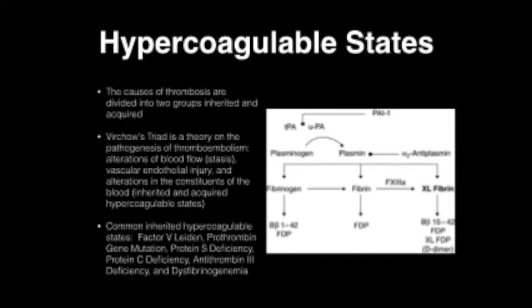Common inherited hypercoagulable states include Factor V Leiden, prothrombin gene mutation, protein S deficiency, protein C deficiency, antithrombin III deficiency, and dysfibrinogenemia.